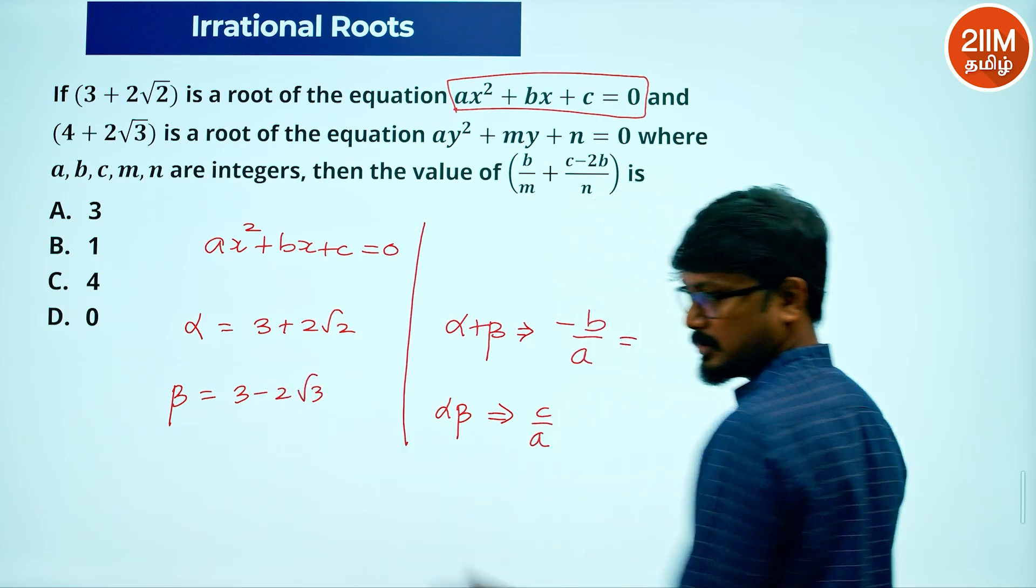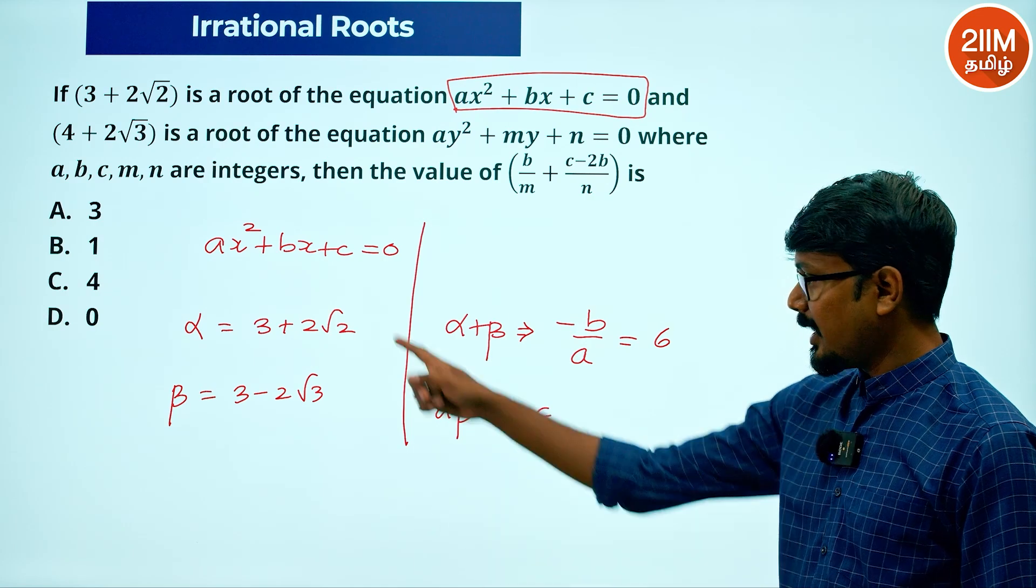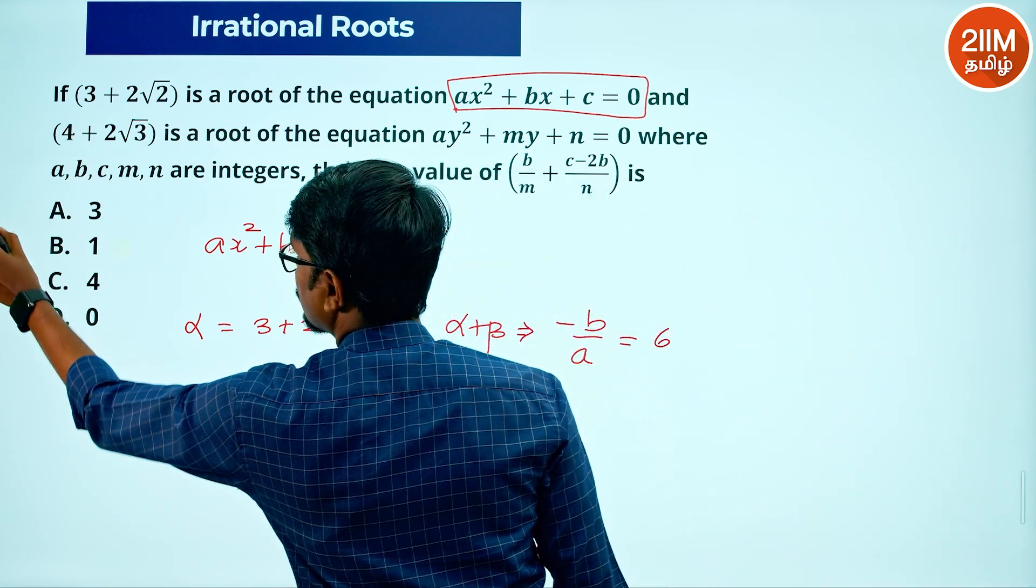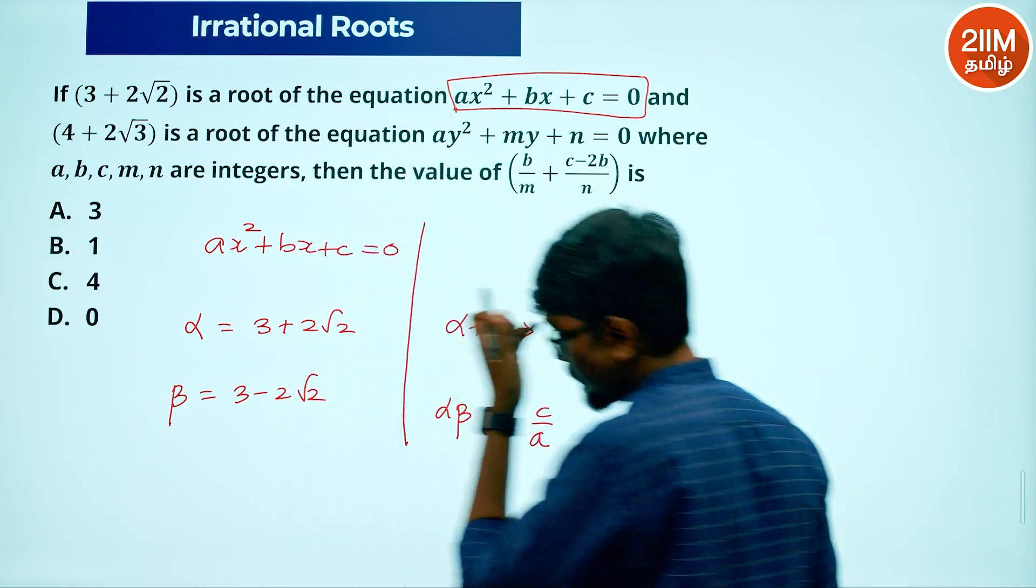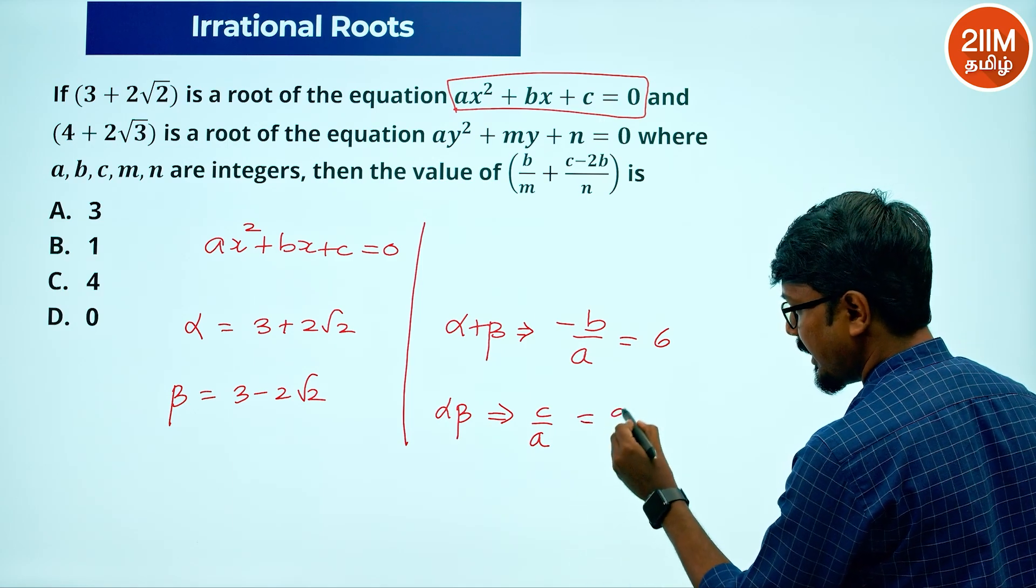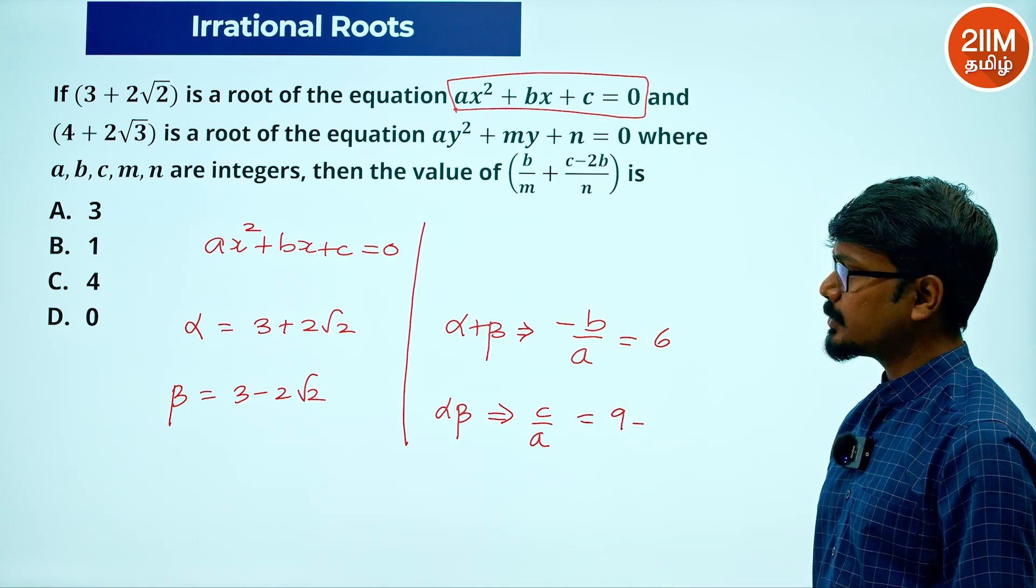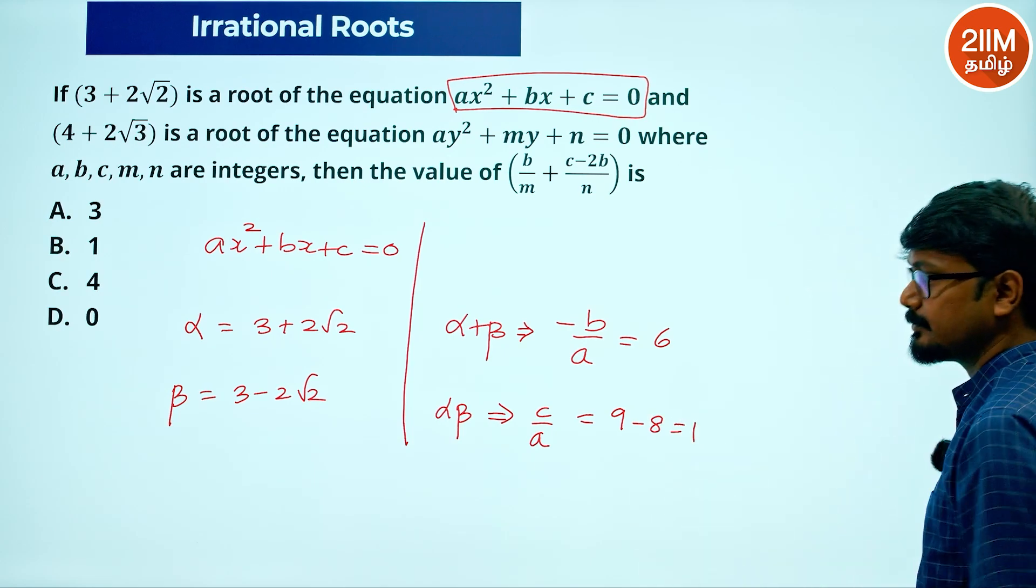Putting in the values, 3 plus 3 is 6, plus 2 root 2 minus 2 root 2 cancelled. And c by a, using a plus b times a minus b equals a squared minus b squared: 9 minus 2 root 2 whole squared, which is 4 times 2, so 8. That adds to 1.